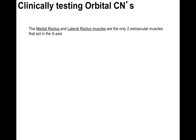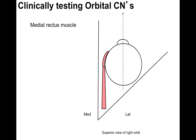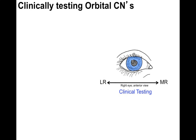The medial rectus and lateral rectus muscles are the only two extraocular muscles that act in the x-axis. To clinically test these two muscles and their associated cranial nerves, we take a look at their actions. The lateral rectus abducts the eye; the medial rectus adducts the eye. So to clinically test them, have the patient look towards their nose or towards the wall. The medial rectus will test cranial nerve 3, and the lateral rectus will test the abducens nerve, cranial nerve 6.